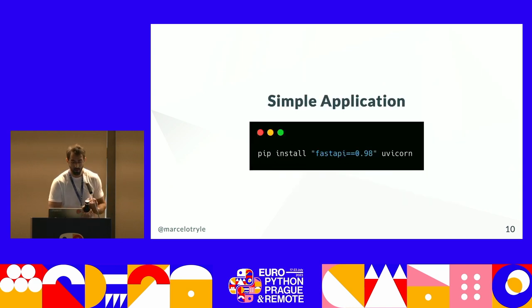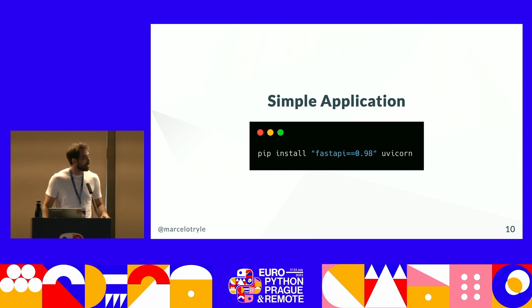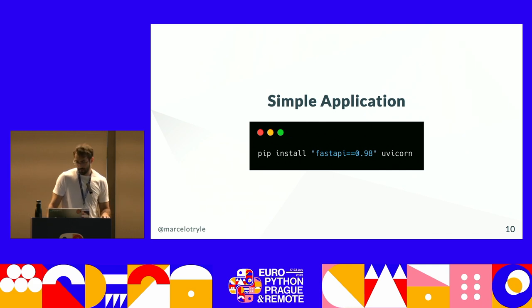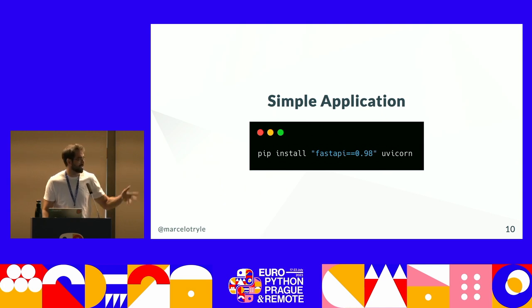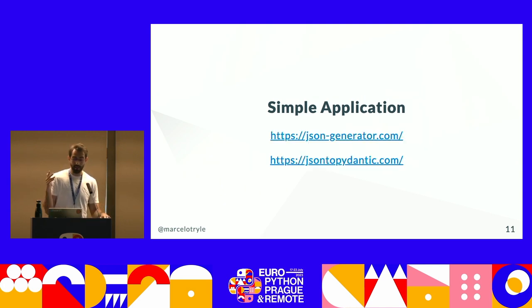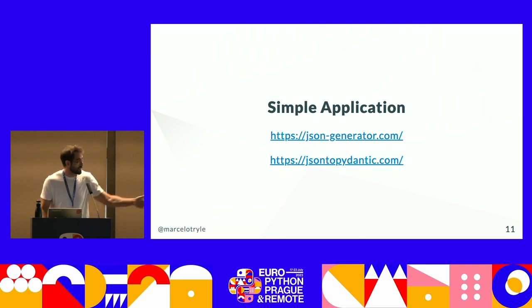I'm going to be using FastAPI version 0.98 because the latest version already uses Pydantic V2. At the end I'll show how using V2 improves performance. The data was generated using two tools: JSON Generator and JSON to Pydantic — really nice tools.